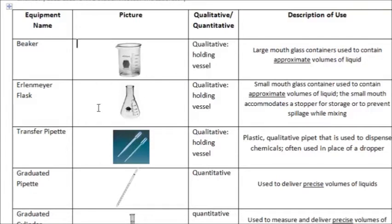Erlenmeyer flasks serve the same purpose, except they have a smaller opening on top that we can put a cork into. We use those when we're dealing with things that might evaporate very quickly or vaporize.